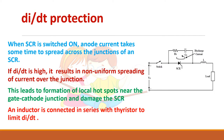Next is dI/dt protection. For dV/dt protection we used an RC circuit. Now to limit the rate of change of current, we use an inductor in series with the RC combination. This will limit the current.